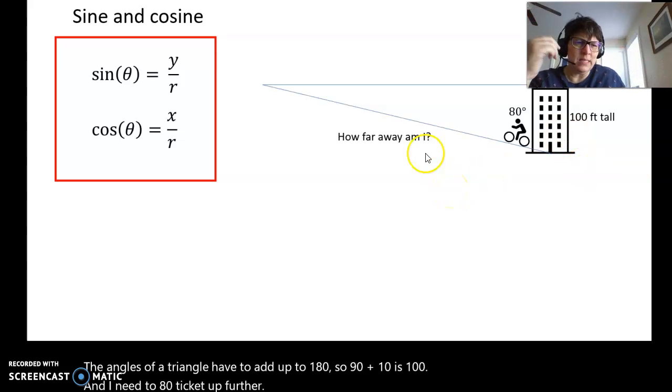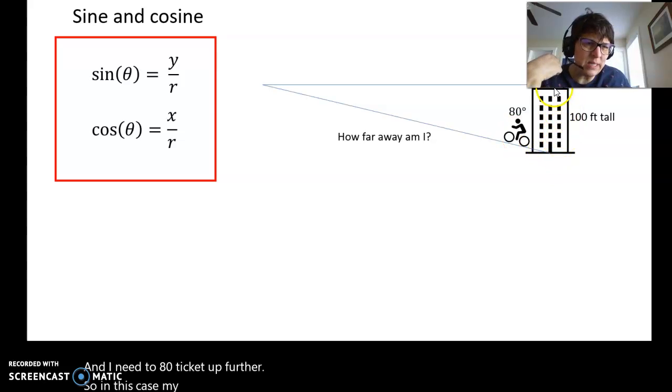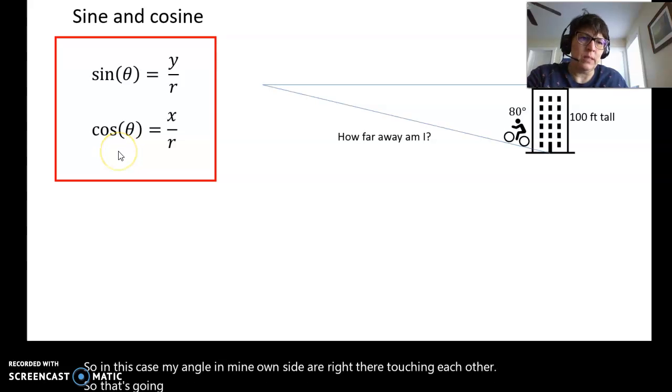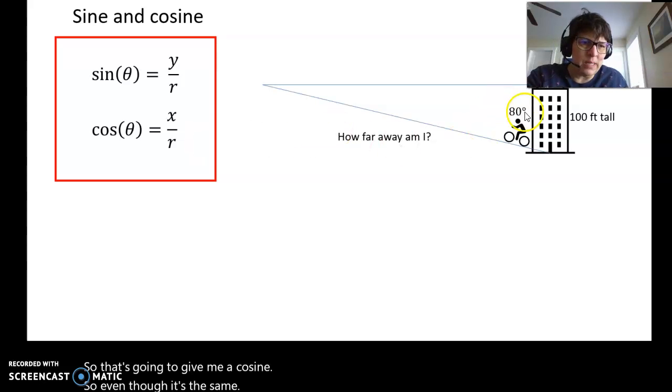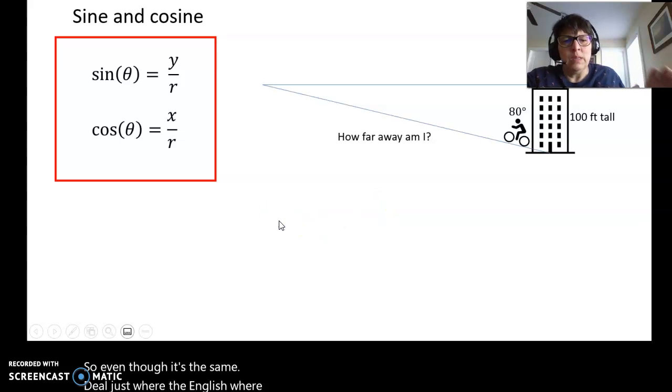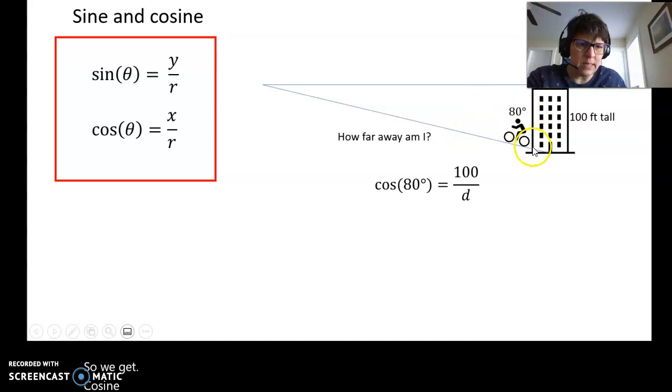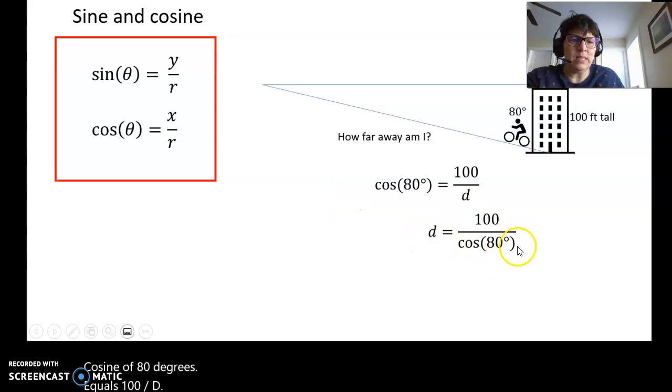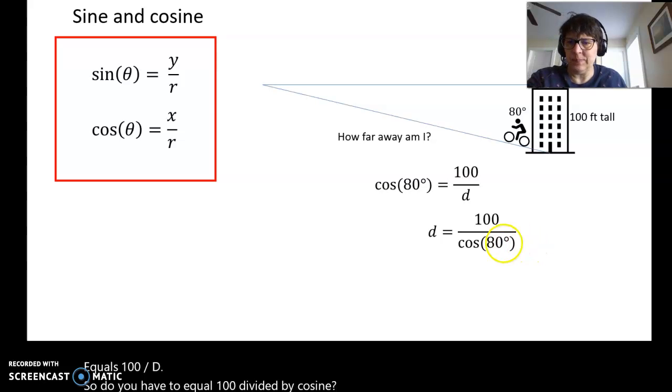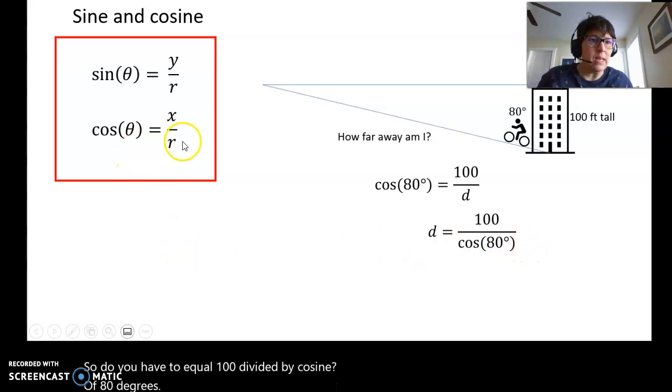So in this case, my angle and my known side are right there touching each other. So that's going to give me a cosine. So even though it's the same deal, it's just where the angle is, what we know. So we get cosine of 80 degrees equals 100 divided by D. So D has to equal 100 divided by cosine of 80 degrees. And let's pull up the calculator.